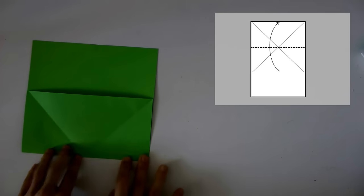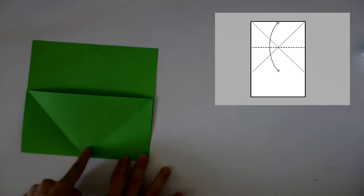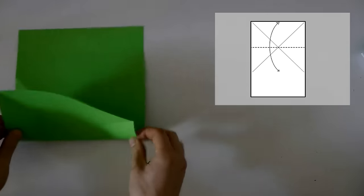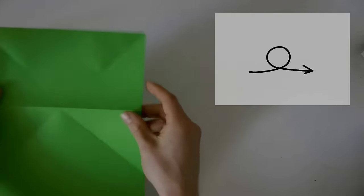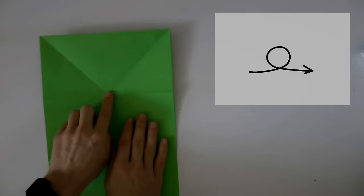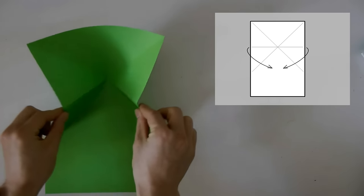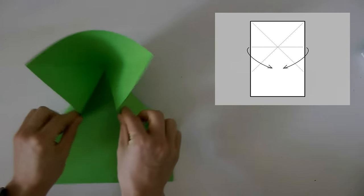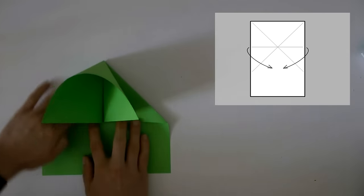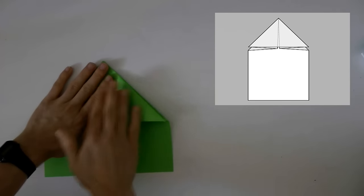Turn it around once more, push in the center, and then take the sides and pull them down like this. You get a double triangle which is actually called a water pump base.